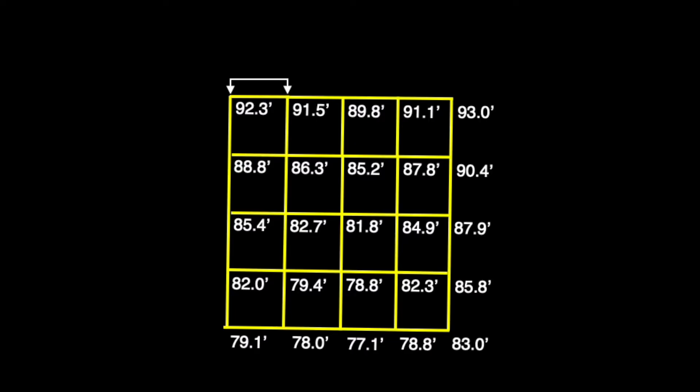To start, we'll look at the first grid square on the upper left and the two elevations taken on its upper corners. Seeing that we have one elevation at 92.3 feet and another at 91.5 feet to its right, we can tell that there is a descending slope in that direction.